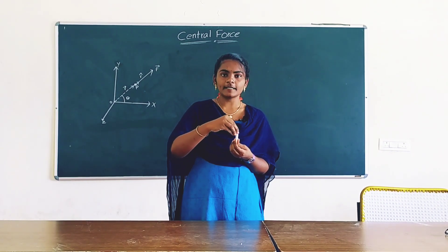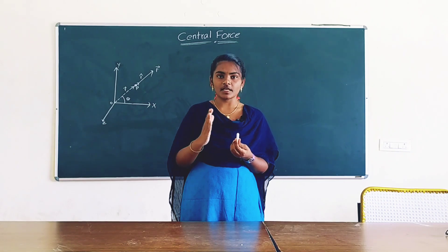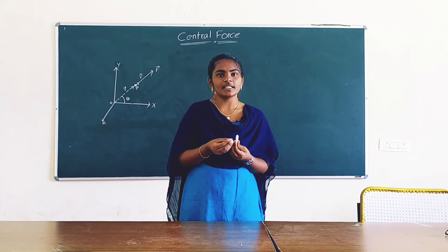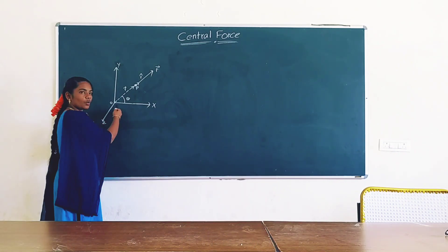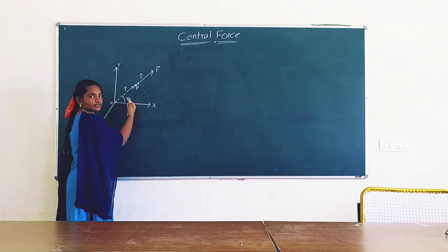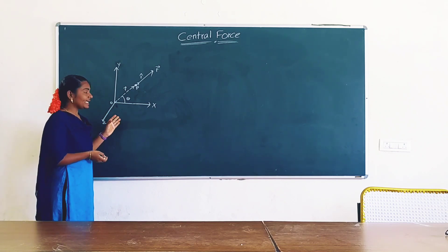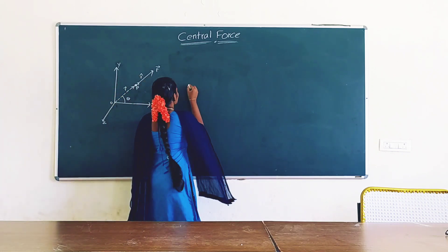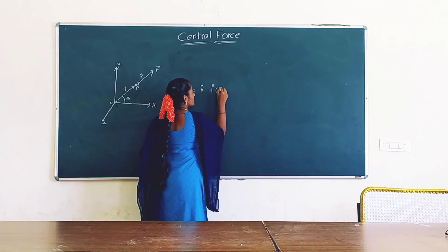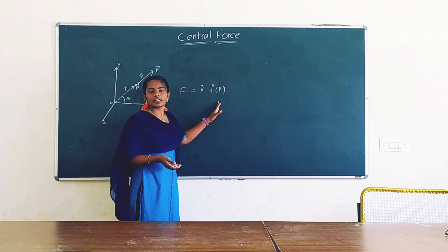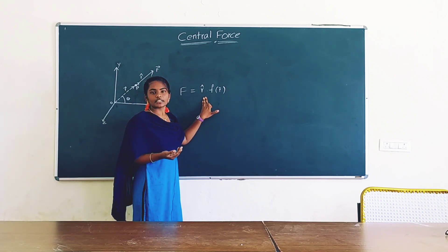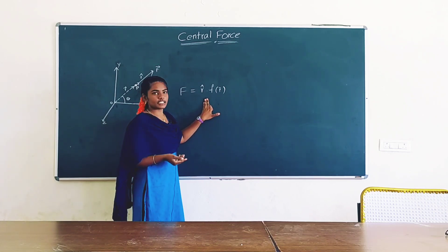Let us consider O to be the center of force and P is the particle whose polar coordinates are R and Theta. The central force acting on the particle P is defined as F = R̂ · f(R), where f(R) is the function of distance R of the particle from the fixed point, and R̂ is the unit vector along the radius vector R of the particle with respect to the fixed point.